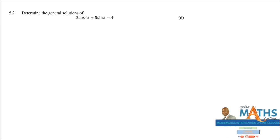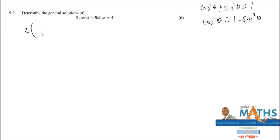Let us proceed to the next problem. Here we have a challenge: we have cos²x and sin x. I cannot change sin, but I can change cos² using the square identity — cos²x = 1 - sin²x. Take use of the square identity. Substituting: (1 - sin²x) + 5 sin x = 4. Try to change the squared term so we can solve for sin only.